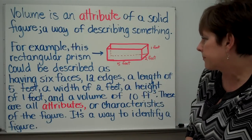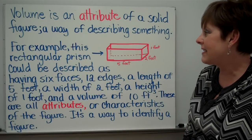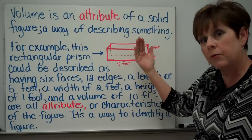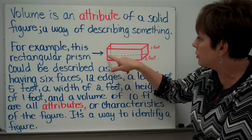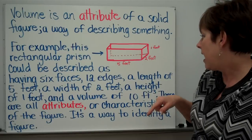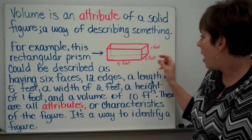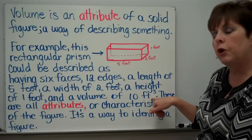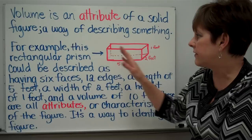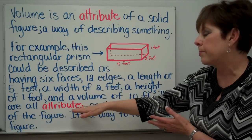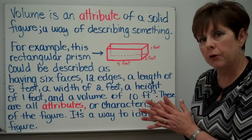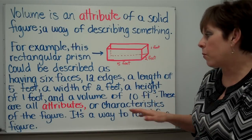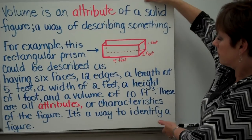For example, if I looked at this rectangular prism, and by the way, I am not an artist, so if this is not perfect, forgive me. This rectangular prism could be described as having six faces, like faces on the side, on the front, top, bottom and the back, the one you can't see. It could be described as having twelve edges along the sides. It could be described as having a length of five feet, a width of two feet, and a height of one foot. It could also be described as having a volume of ten cubic feet. And these kind of things that I've said, faces and edges, and that kind of thing, are attributes. An attribute is a characteristic of the figure, something that it has that makes it different from another figure. It's a way to identify a figure.